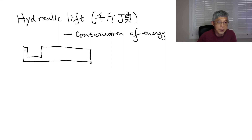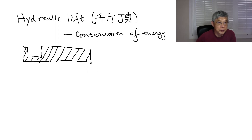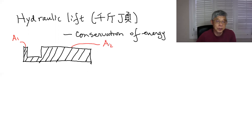Inside here it's all fluid — it's like some sort of oil. The area here, I'm changing color, the area here we're going to call A1, and the area here we're going to call A2. This is not drawn to scale, but we'll try.